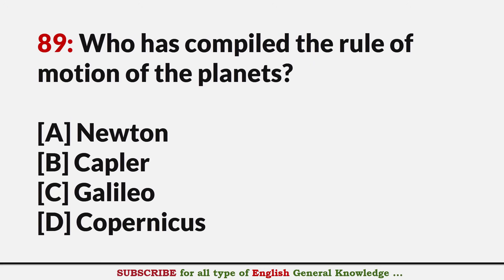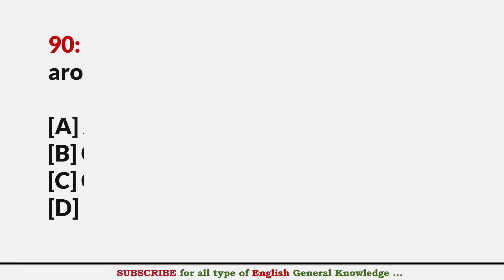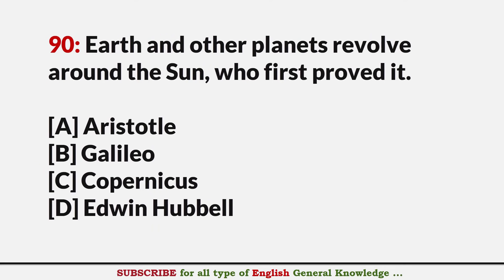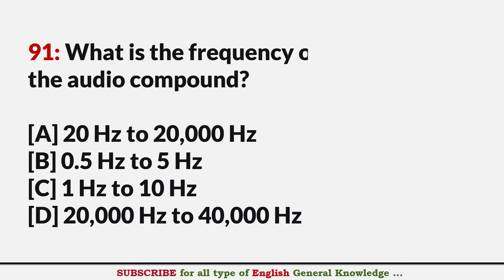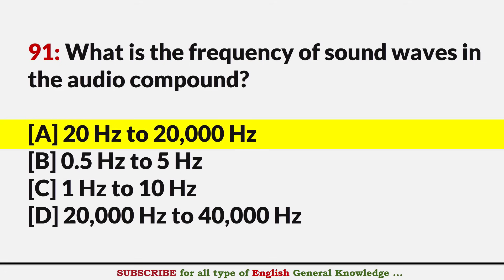Who compiled the rules of motion of the planets? Answer B: Kepler. Who first proposed that Earth and planets revolve around the sun? Answer C: Copernicus. What is the frequency range of sound waves in the audio range? Answer A: 20 hertz to 20,000 hertz.